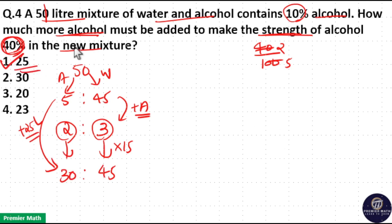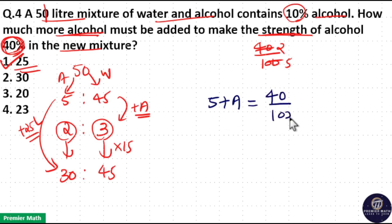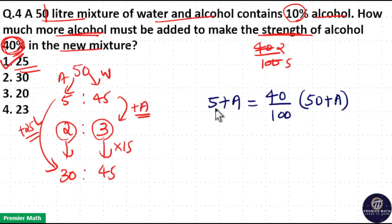You can also solve this question using a different method. Initially 5 liters was the alcohol part. When you add 'a' liters of alcohol, the total alcohol becomes 40% of the new solution. Initially 50 liters, when you add 'a' liters of alcohol the new solution becomes 50 + a. So: 40% of (50 + a) = 5 + a, which gives 2/5 of (50 + a) = 5 + a. When you solve this, you get a = 25 liters.